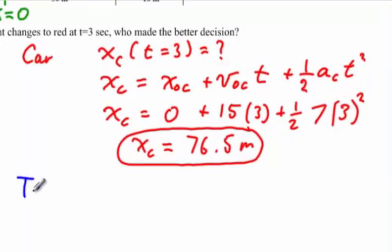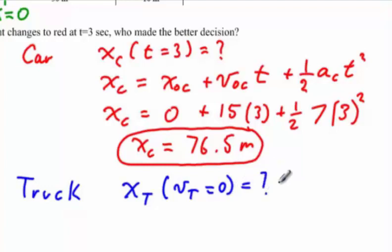Thus, when analyzing the truck and deciding whether it is a good decision to hit the brakes, we would like to know the x of the truck, not at the time t equals 3 seconds, but when the velocity of the truck has become 0, meaning where does the truck stop. If this answer is anything less than 30 meters, it was a good decision to hit the brakes. However, if this answer is beyond 30 meters, hitting the brakes was a bad decision because you were unable to stop prior to entering the intersection.